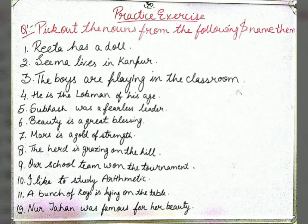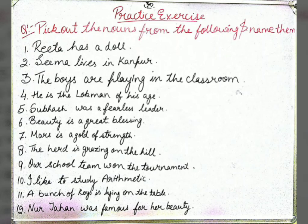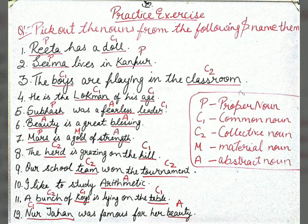Now here is a practice exercise for you. Pick out the nouns from the following sentences and name them — identify what kind of noun each is. The sentences are: Rita has a doll. Seema lives in Kanpur. The boys are playing in the classroom. He is the Lokman of his age. Subhash was a fearless leader. Beauty is a great blessing. The herd is grazing on the hill. Our school team won the tournament. I like to study arithmetic. A bunch of keys is lying on the table. Noor Jahan was famous for her beauty. The answers are provided in the next slide — I have underlined each noun and written its short form.